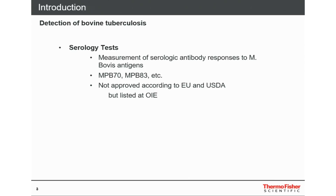Then you have a third possibility to measure bovine tuberculosis: a serological test, where you can measure or determine serological responses to M. bovis antigens. It could be either MPB-70 or MPB-83. It is not approved according to EU and USDA, but it is listed at the OIE.